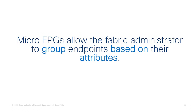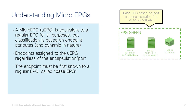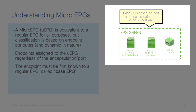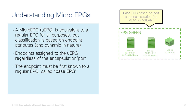Micro-EPGs allow grouping endpoints based on their attributes. To configure this, you first define a base EPG — a regular EPG on a bridge domain with no special designation. Workloads, physical or virtual, are associated to the base EPG using the usual static or dynamic binding methods. All workloads you want to further classify into smaller groups must first be associated with the base EPG.